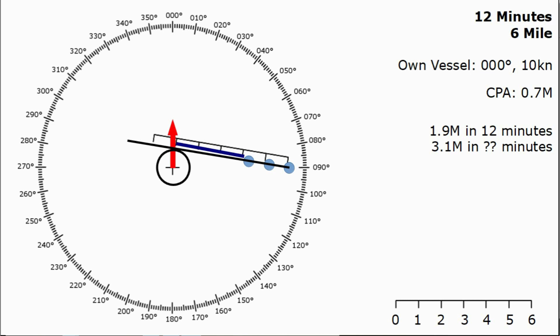We can use a ratio here because these are all just linked to each other and we can say 1.9 over 3.1 equals 12 over the time to the closest point of approach. And shifting around with a bit of algebra we get the TCPA is 19.6 minutes.